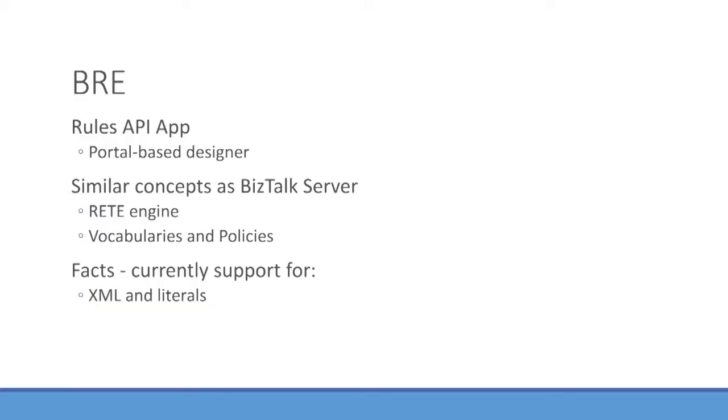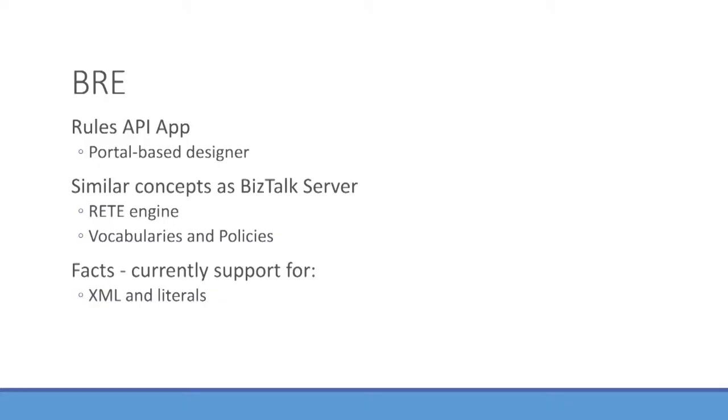Then you've got rules. This is something I talked about last year where there was no rules solution in BizTalk services. The great news now is there's a rules or policy API app — similar concepts, similar type of engine. I can create policies, vocabularies, and rule sets in a similar way to BizTalk Server. Right now it's too early to say whether there'll be structural similarity for conversion, but it's certainly something we are actively looking at and working with the product group on — to take each one of these individual artifacts from BizTalk Server and be able to convert them and run them in the new service as a Logic App.